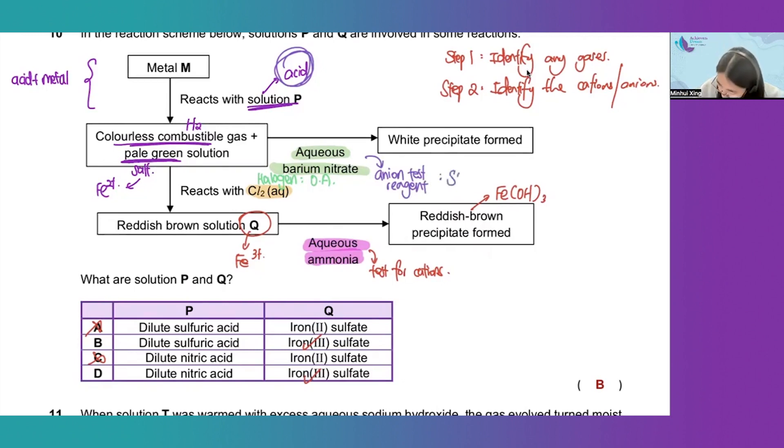It tests for sulfate anion. We can see that a white precipitate forms, which is barium sulfate.